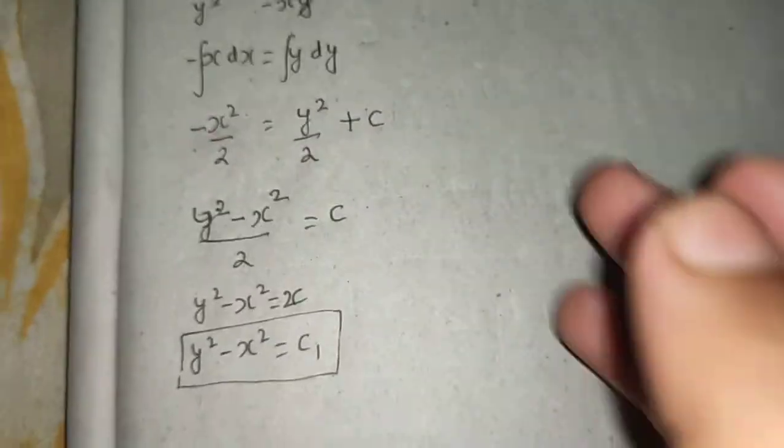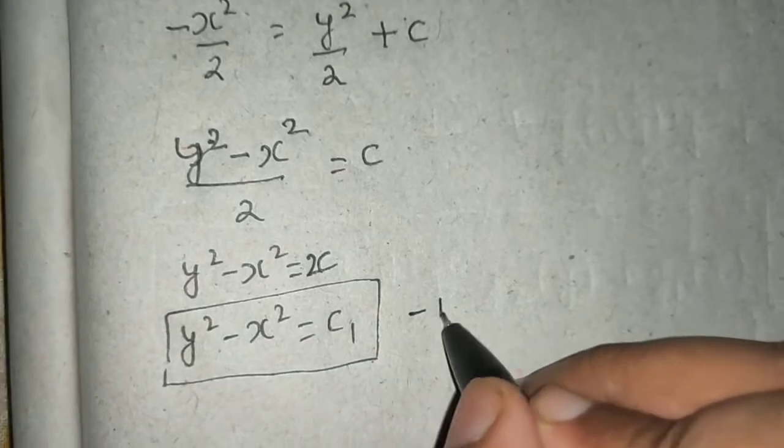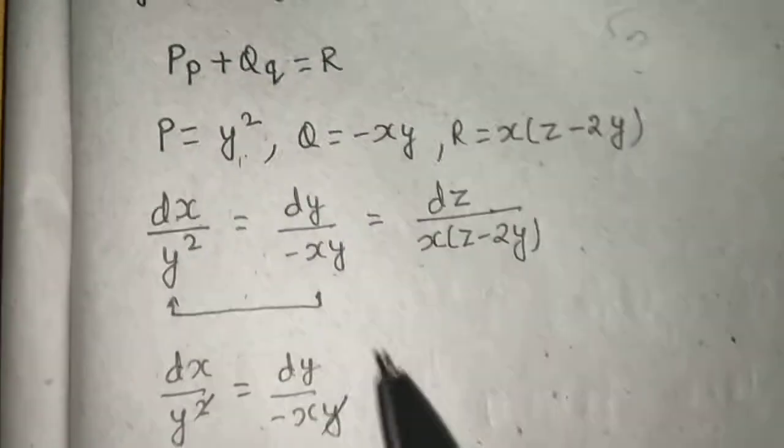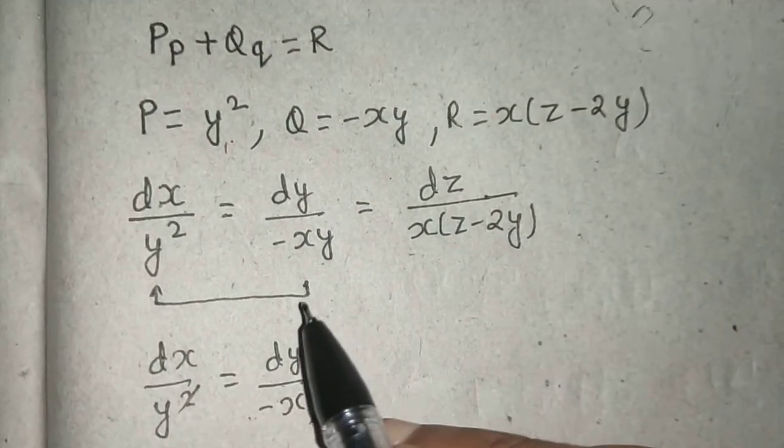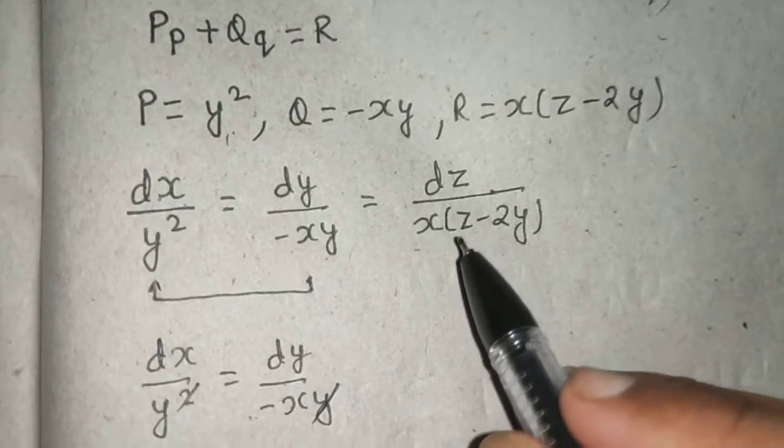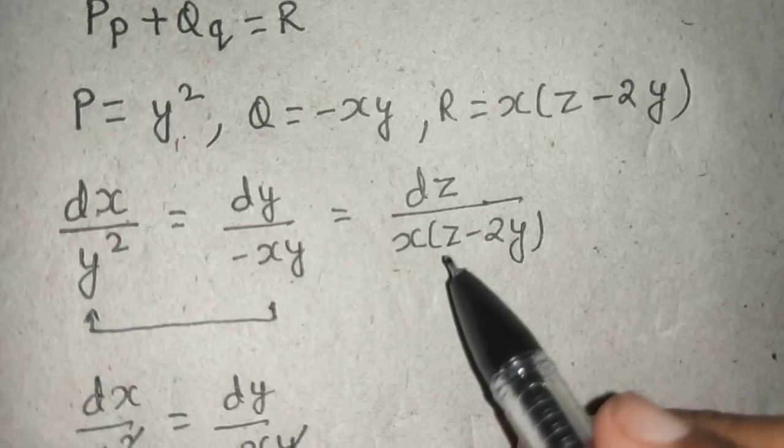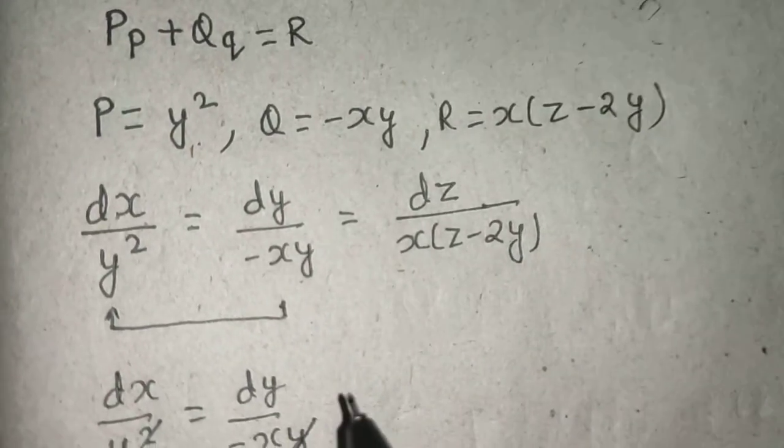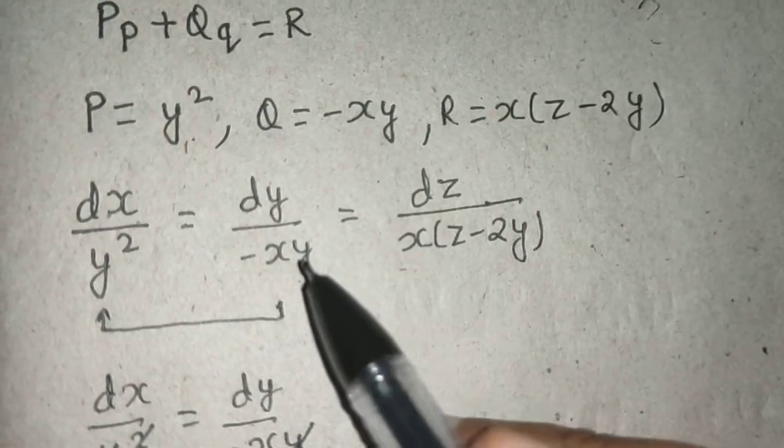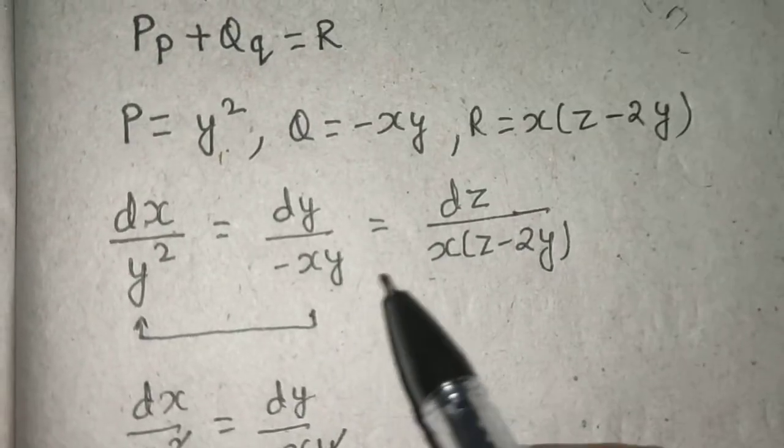So you have got one equation from here, let's name this equation number one. Now you have to necessarily equate two and three. You're not left with an option because here you see you will have three variables which you anyway don't want.